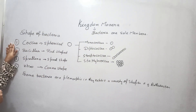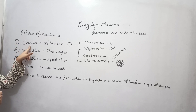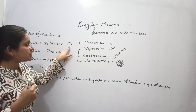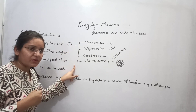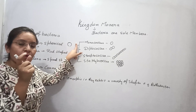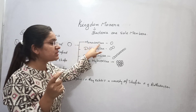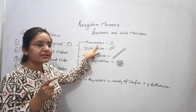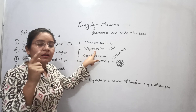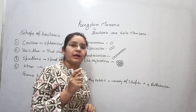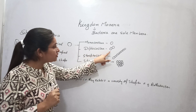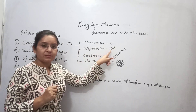The first shape is coccus. Coccus means a spherical or round oval shape. These are further classified into different categories. One is monococcus — when only one unicellular bacterium is there; mono means one, coccus means spherical shape. Diplococcus — such as Diplococcus pneumoniae, a bacterium that causes pneumonia — here two coccus bacteria are present.